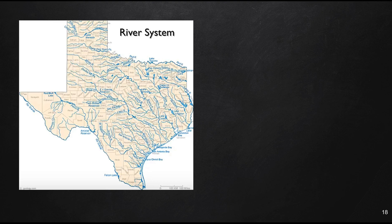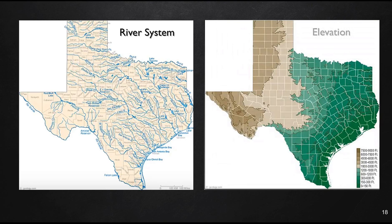Looking spatially at a river system map of Texas, we can see a general pattern where all rivers flow in a certain direction. Without knowing anything else, we can understand the geography of why: there is an elevation change from west to east toward the Gulf of Mexico. These river patterns trend from west to east into the Gulf, and asking why rivers flow in this direction leads us to the answer — elevation.